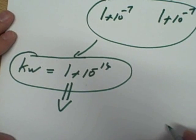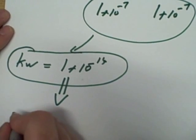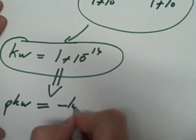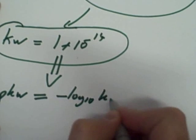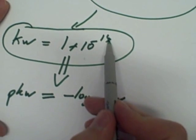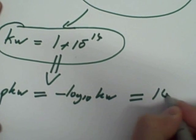So what we're going to do is bring in logs. Logs have been invented to make our lives an awful lot easier, and I need pKw. And pKw is equal to minus log to the base 10 of Kw. Now I'd like to think, looking at this value, you have a pretty good idea what pKw is going to be if you log in that. It's going to be 14.